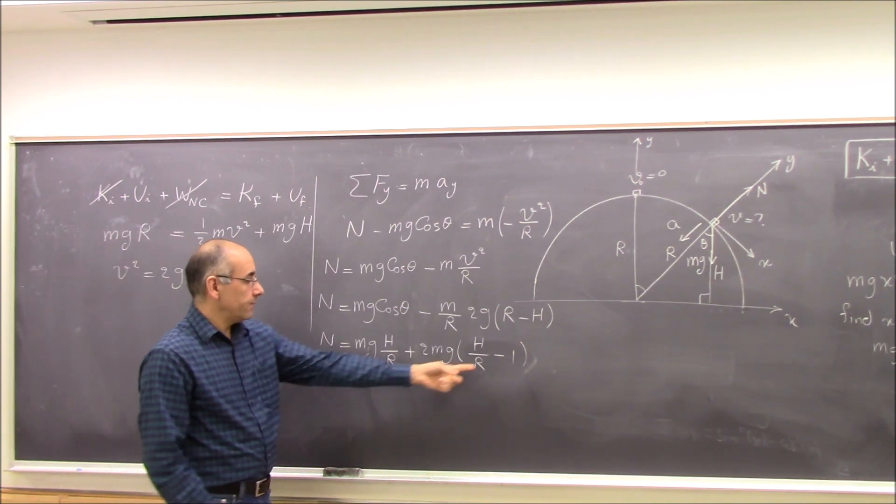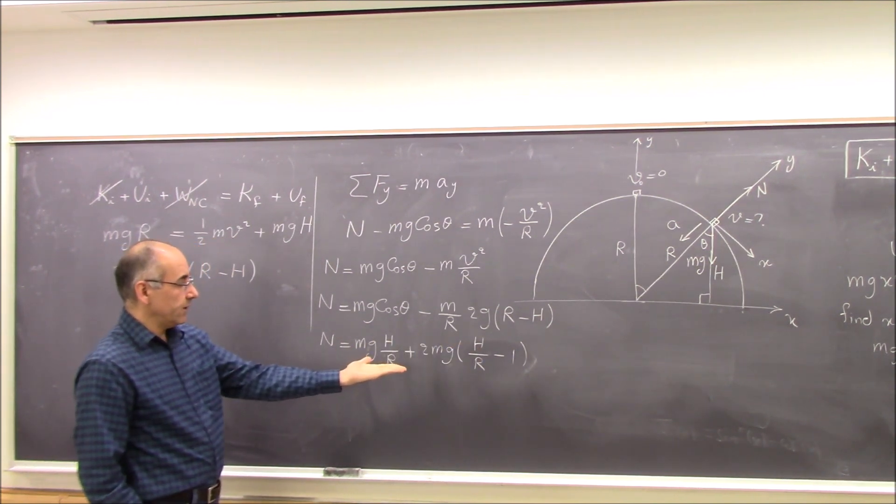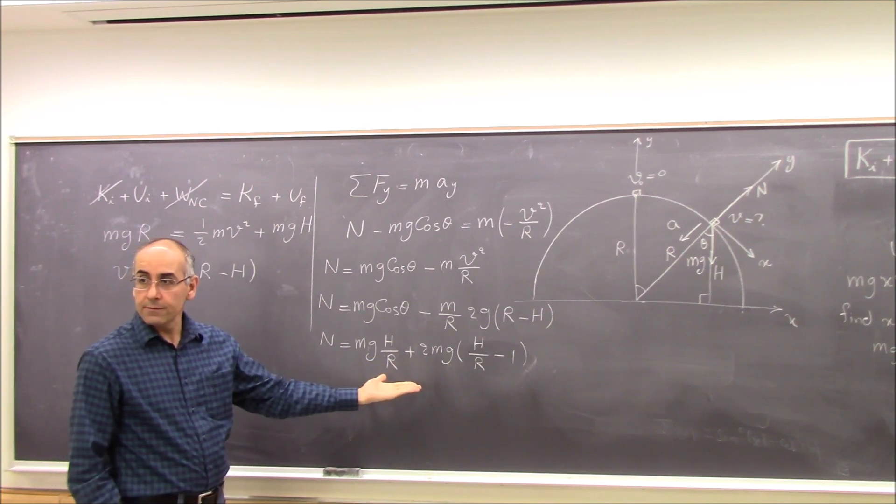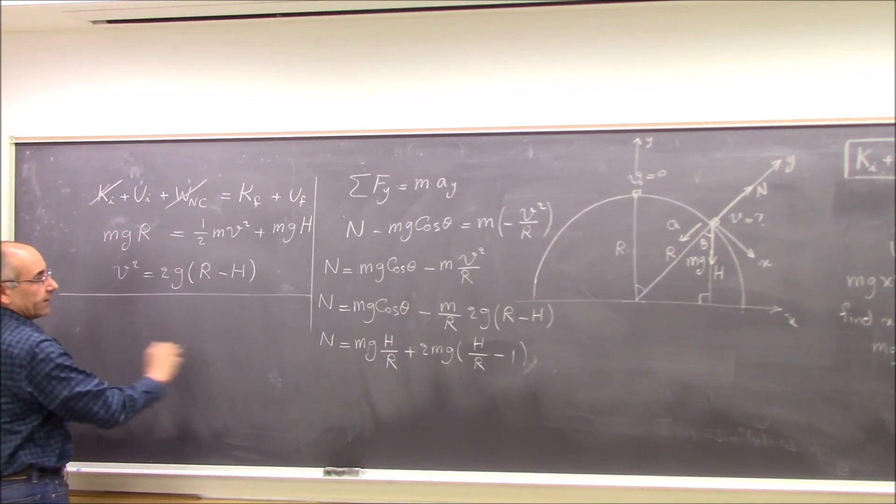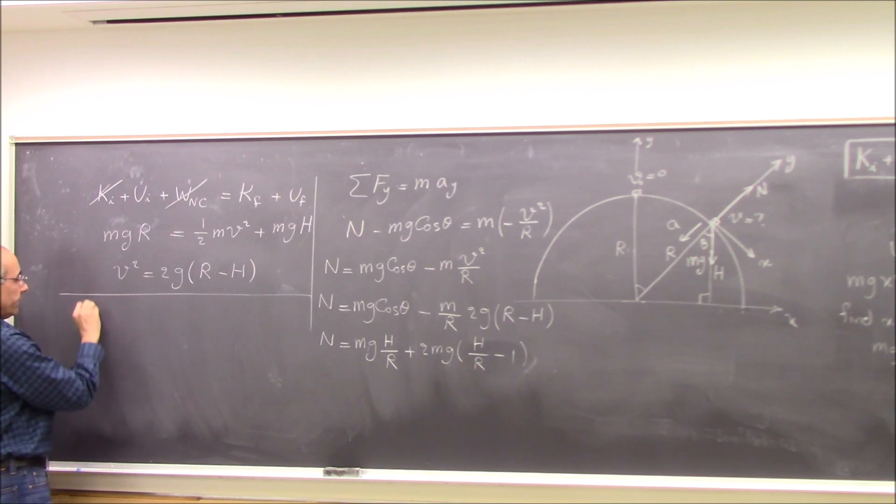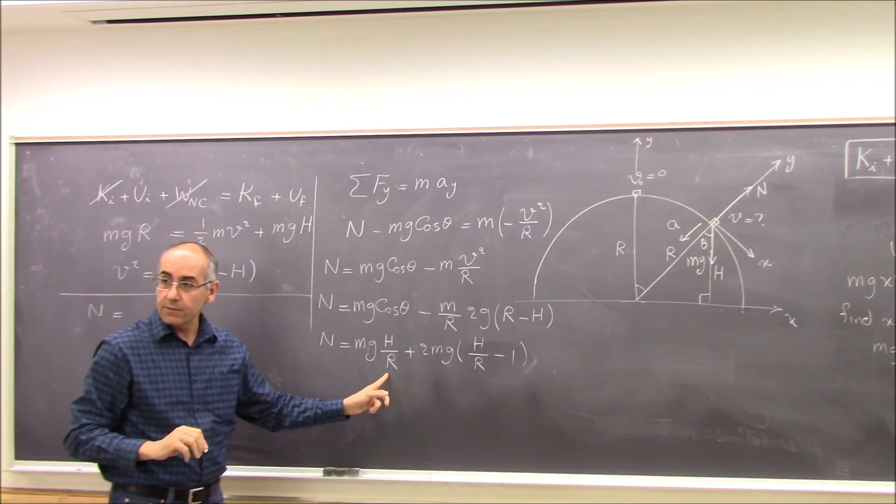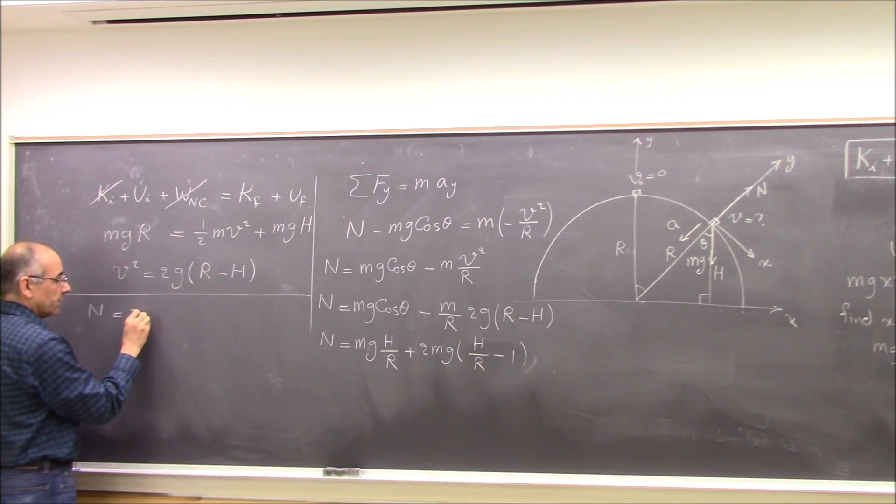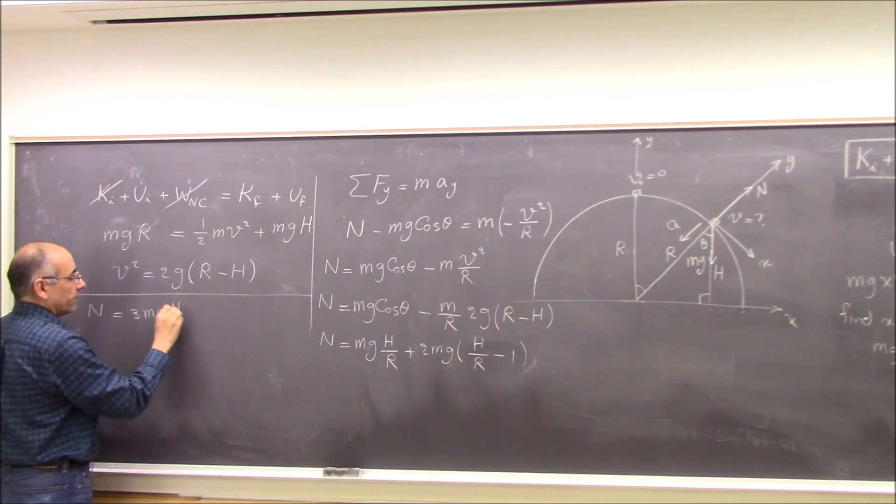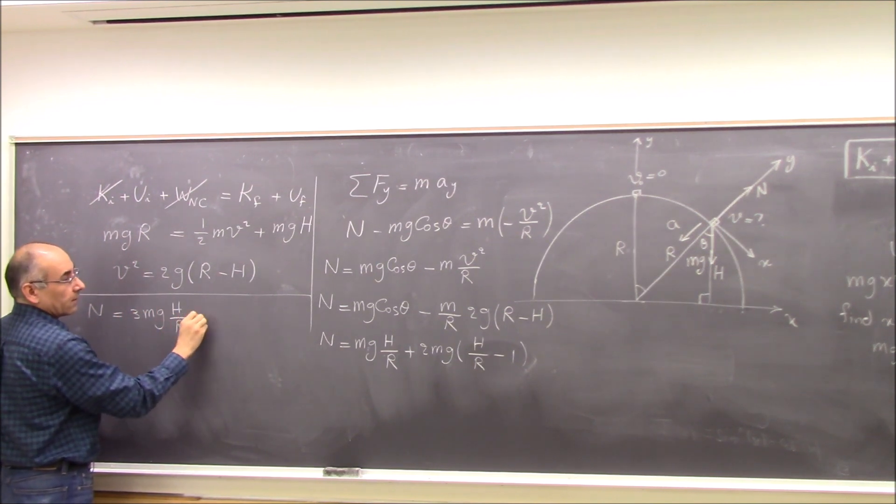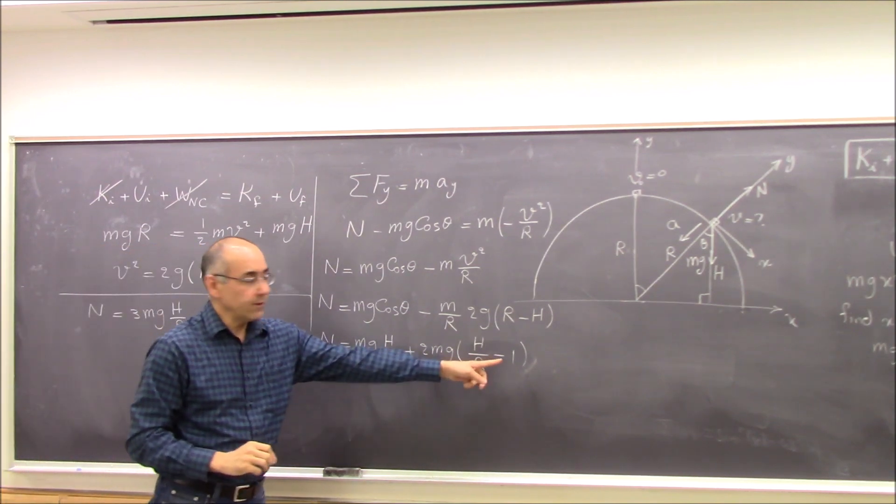So now you see I have everything in terms of Mg and H and R. Let me combine here. N will be what? 2Mg H over R and Mg H over R becomes 3Mg H over R minus 2Mg, right?